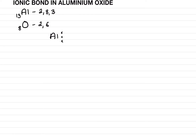Now draw oxygen — oxygen has six electrons: one, two, three, four, five, six. If aluminium gives it two electrons, oxygen gets a complete eight electrons. But aluminium has one electron left, so we draw another oxygen with six electrons: one, two, three, four, five, six. This aluminium gives its one remaining electron.